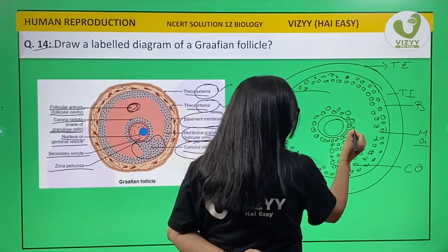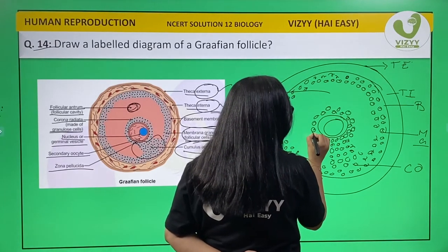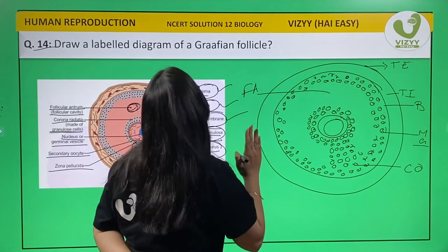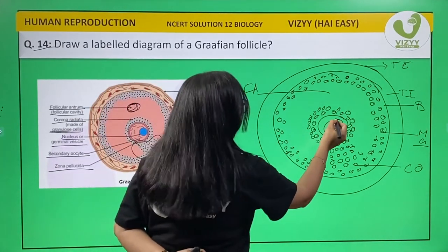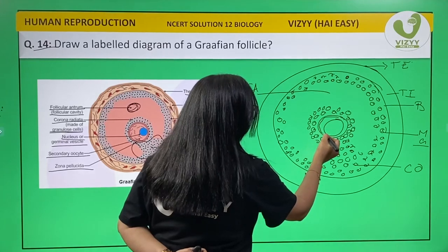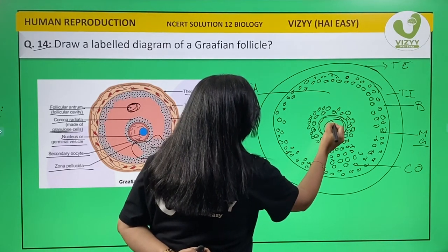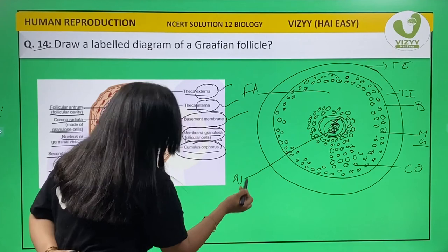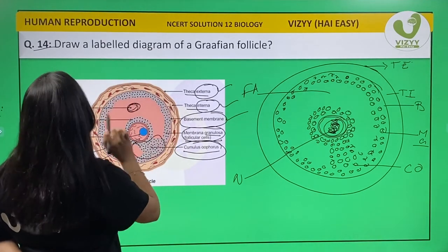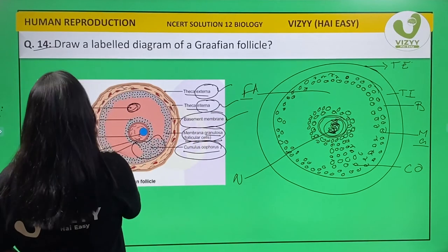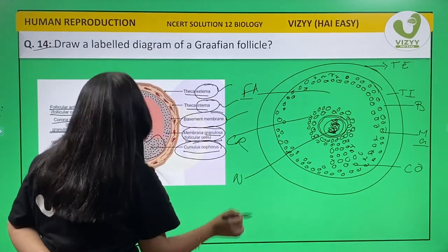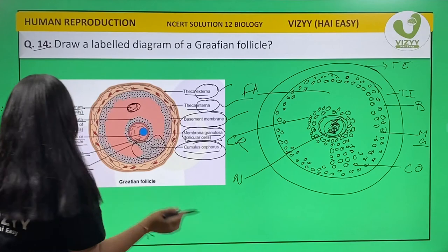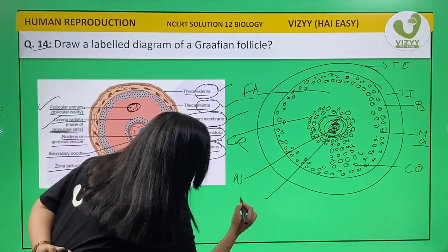Remember to make two layers for the corona radiata. Now I'm coloring this to show the nucleus. This is your nucleus. The follicular antrum is labeled, the corona radiata is done, and the nucleus is done.